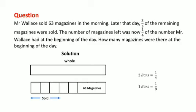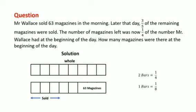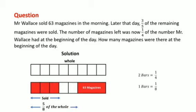And by implication, this means that the original amount is represented by a bar of eight equal subdivisions. Our aim here is to obtain a fraction that represents the 63 magazines because this information can enable us to find the whole. This, therefore, is five-eighths of the whole.